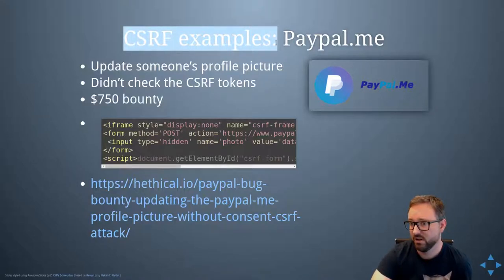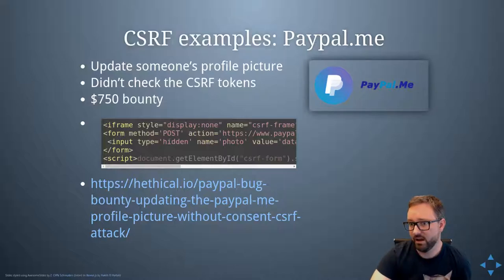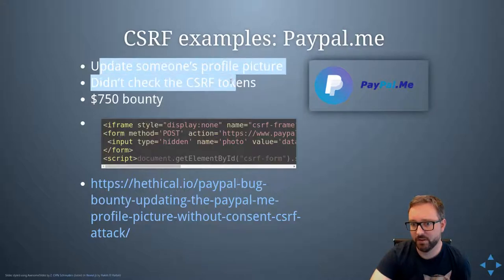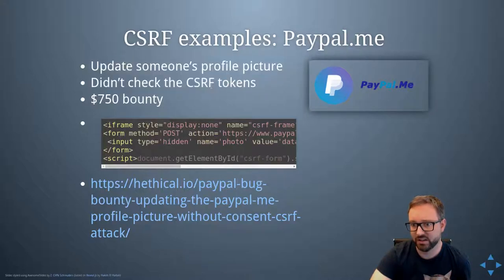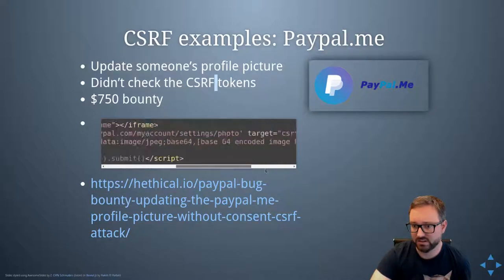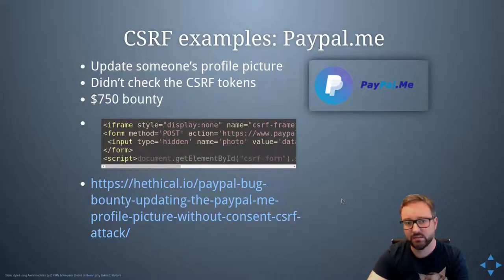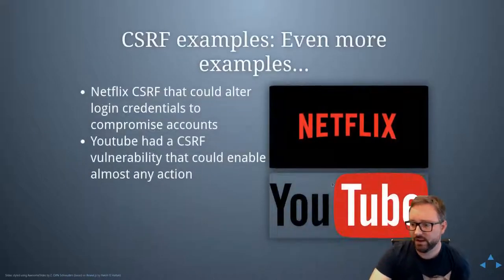There was also an example on PayPal where you could update someone's profile picture because they didn't check the tokens — it's as simple as that. The researcher received a bug bounty for finding that vulnerability.